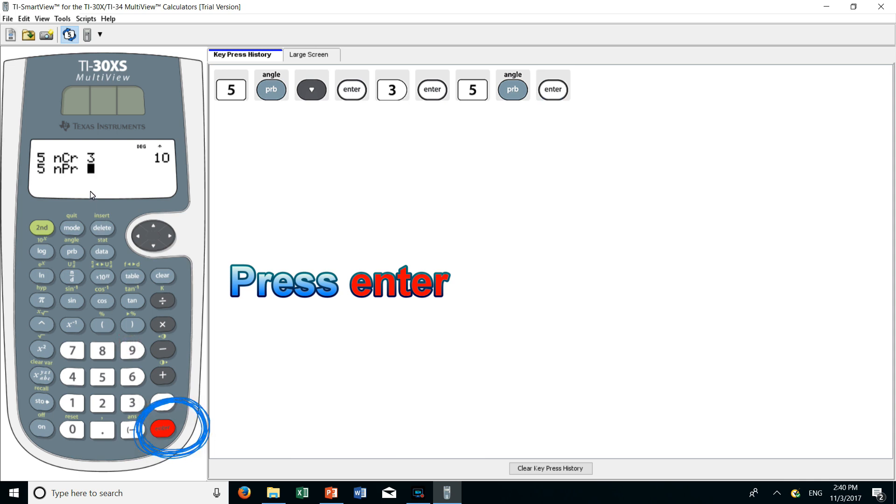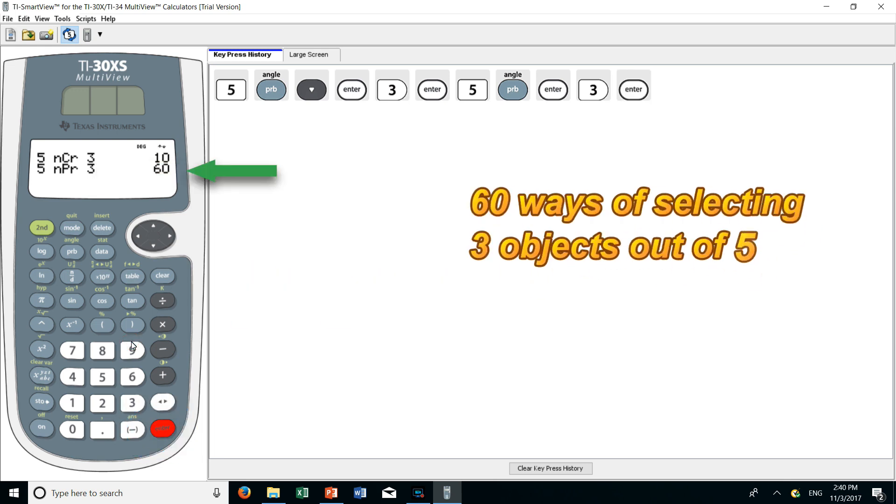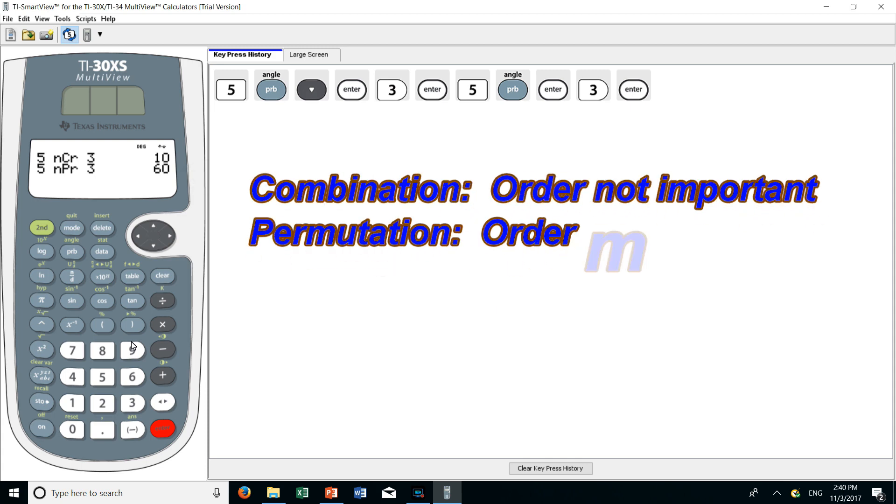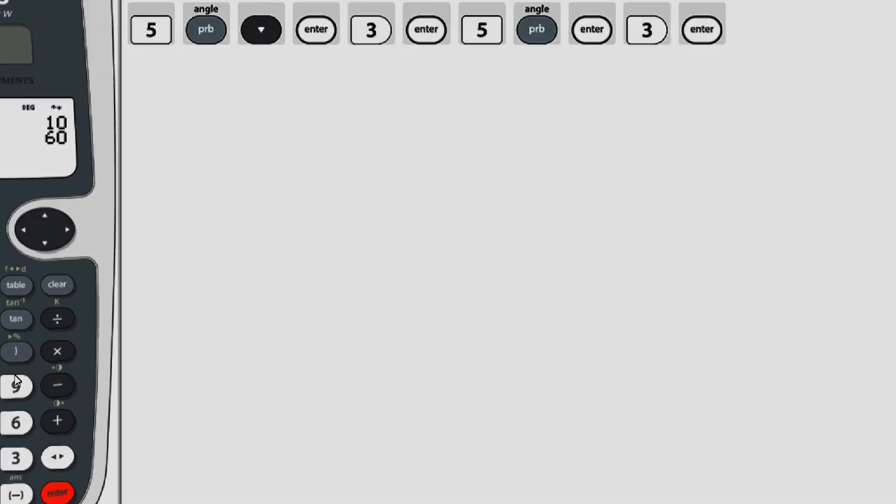And now three is the sample size, so let's press three. Okay, so now we have five, permutation three. And when I press enter, I'll get the answer. And the answer is sixty. There are sixty possible ways of taking three objects out of five when the order matters. When the order does not matter, we use the combination formula. And we saw there were ten possible outcomes.